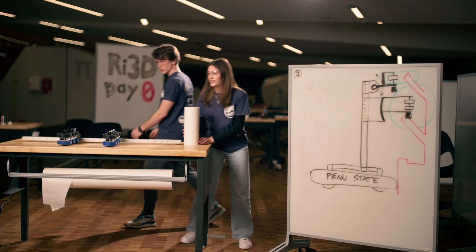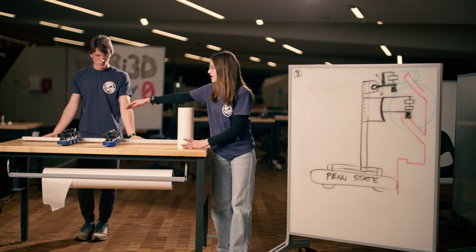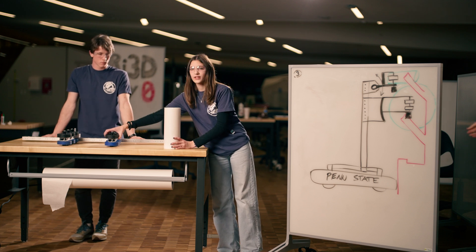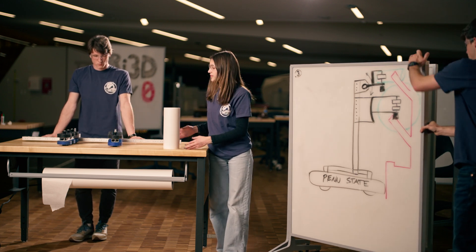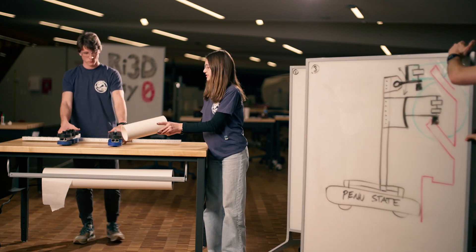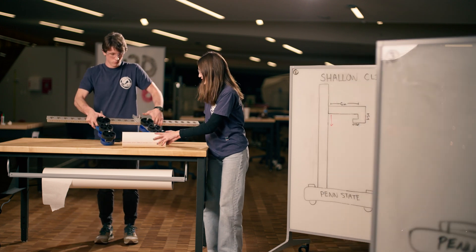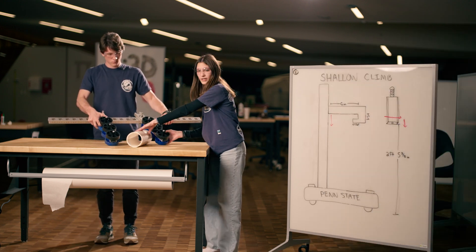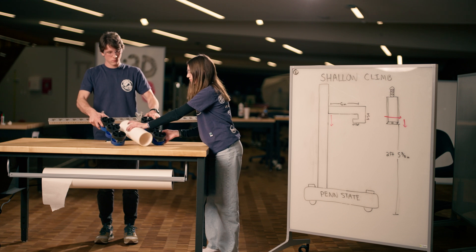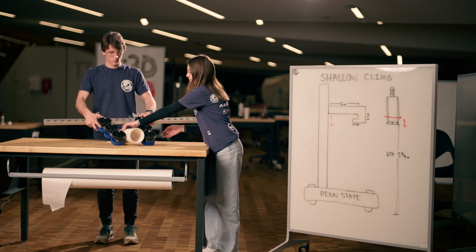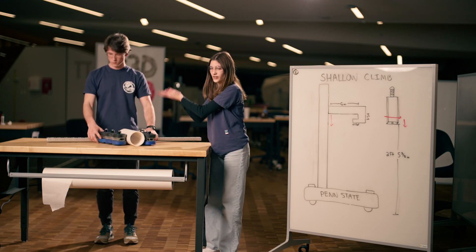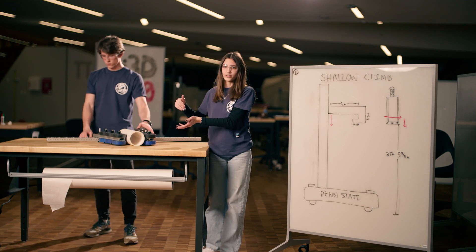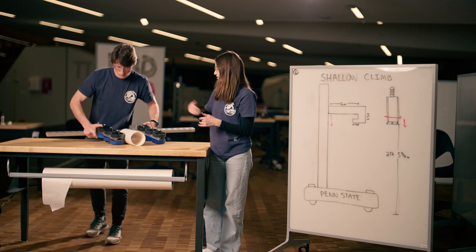Our third prototype is very similar to our first one, except we have one fixed arm and an articulating arm and no roller bar. Tomorrow with this, we want to make sure that this can actually, while spinning, intake from any direction and keep the coral upwards. From here, we want to test and make sure that it will work on our elevator and from any angle put the coral onto the reef.